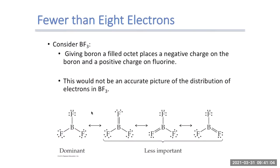Now looking at the second type of exception: when we end up with structures that have fewer than eight electrons. Looking at BF3, boron trifluoride — if we draw the Lewis structure, we can end up with any one of four possible structures. If we give boron an octet, as in the second, third, and fourth structures, that will actually end up putting a formal charge on our fluorine and our boron.